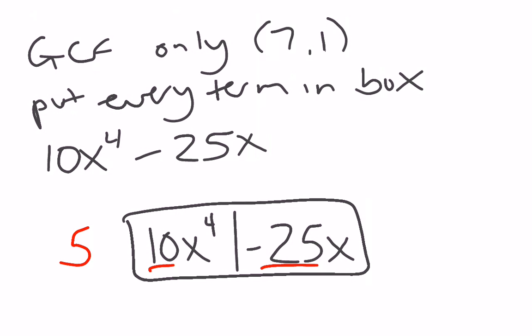Then with my variables, I need to look at my exponents and take the lowest exponent. So my lowest exponent is 1. So I should take out a 5x.